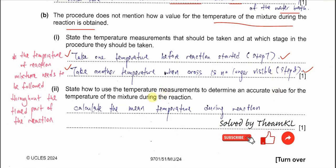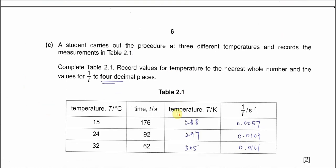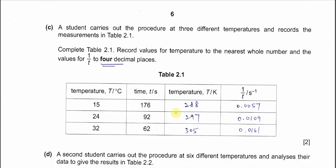Part B2: state how to use the temperature measurements to determine an accurate value for the temperature of the mixture during the reaction. Since we have two temperatures, we calculate the mean temperature: sum the two temperatures and divide by 2 to get the mean temperature for the reaction.